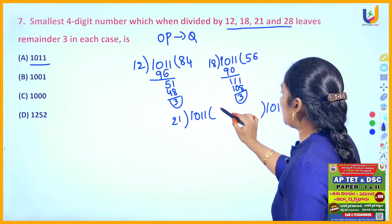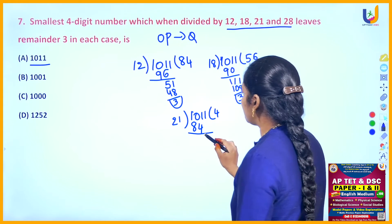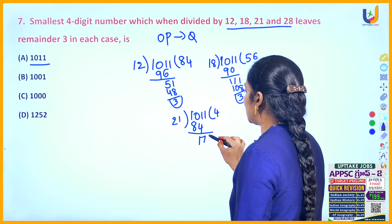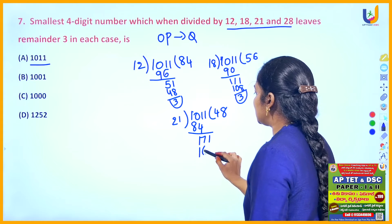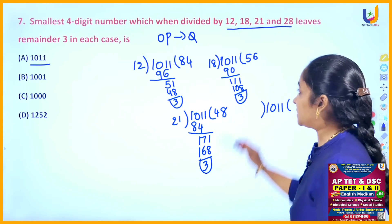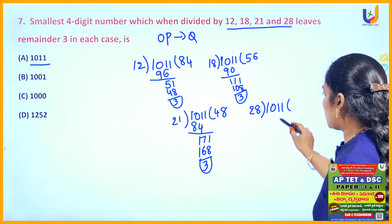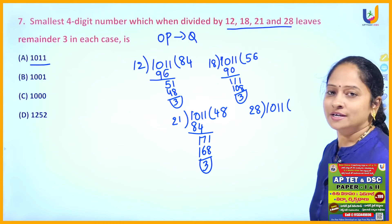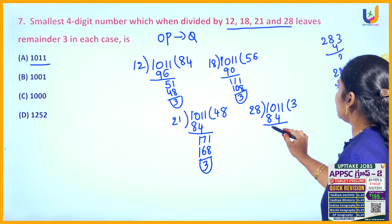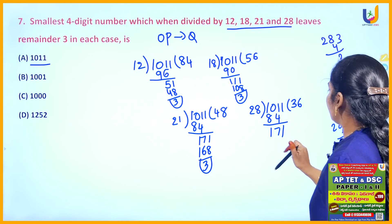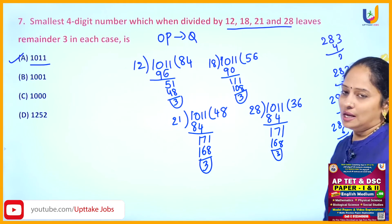The third number is 21. 21 fours are 84; subtracting gives 117; 21 eights are 168, remainder 3 — condition satisfied. For the fourth number, 28: dividing 1011 by 28. 28 threes are 84, remainder 17; bring down next digit giving 171; 28 sixes are 168, remainder 3. All four conditions are satisfied, so the answer is option A — no need to check other options.